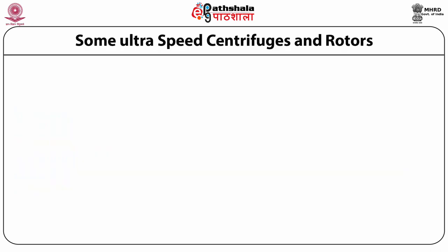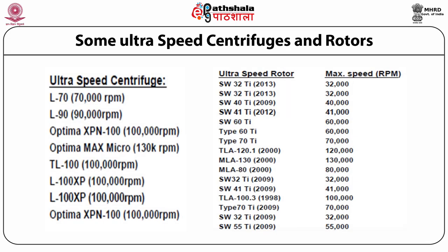Some ultracentrifuge models and their speed limits: the L70 model is capable of up to 70,000 rpm; L90 up to 90,000 rpm; Optima XPN 100 up to 100,000 rpm; Optima Max Micro up to 130,000 rpm; TL100 up to 100,000 rpm; L100 XP up to 100,000 rpm. Corresponding rotor models are listed with their year of market release and maximum speed — for example, SW32Ti was released in 2013 with a maximum speed of 32,000 rpm.